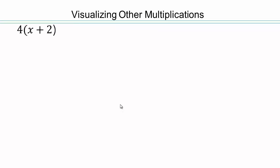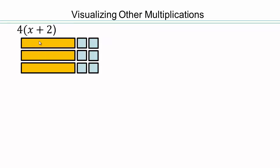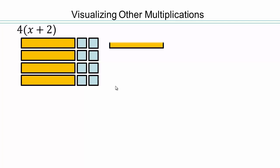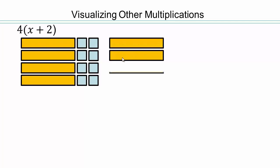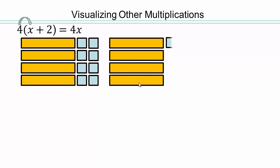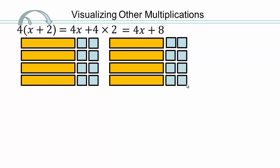Let's visualize multiplication. 4 times x plus 2 — 4 rows of x plus 2s — which is the same as laying all the x's down first, which is 4 times x, and then laying all the 2's down, which is 4 times 2, or 8. Multiplication distributes over addition. That's what we see right here.